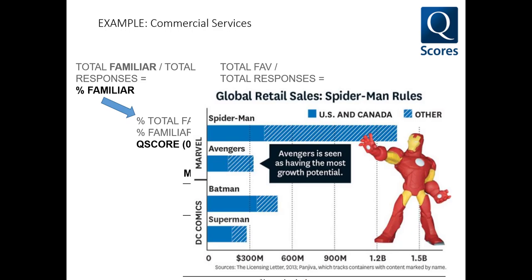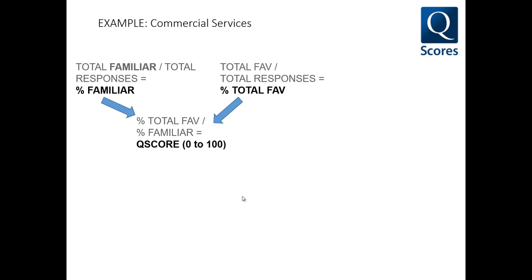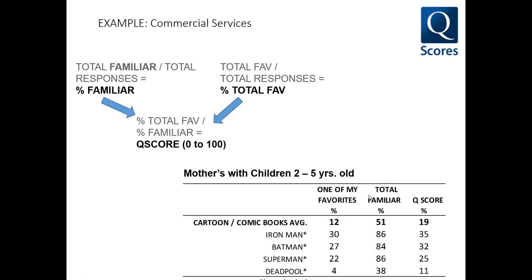Let's illustrate how this might be used by a marketing researcher. Imagine a marketer looking to license the rights to a comic book character for a product targeting mothers with young children. Here we have Q score results specific to mothers with children ages 2 to 5. In the overall cartoon and comic book world for this demographic, the average Q score is 19. Looking at Iron Man, Batman, Superman, and Deadpool, we see Q scores of 35, 32, 25, and 11 respectively. Iron Man and Batman perform relatively high and should be part of the consideration, whereas Superman and Deadpool don't perform nearly as well — sorry, Deadpool.